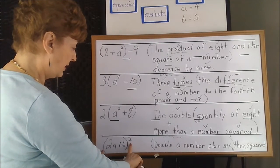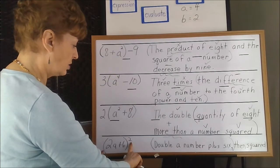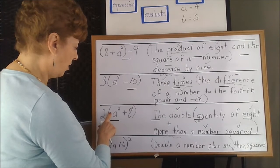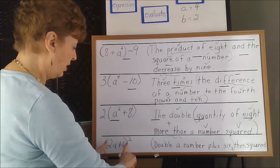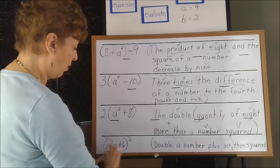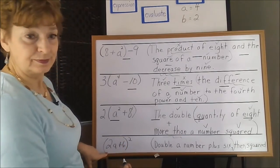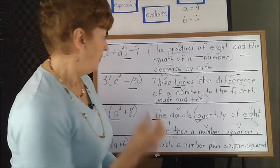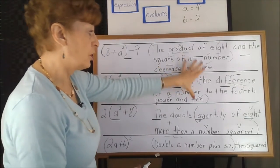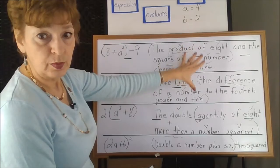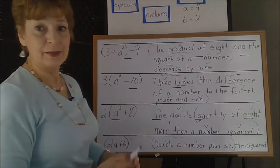Only what the exponent touches gets squared. In this case, only the a is squared. But when you want the whole quantity squared, you put parentheses around the whole thing — then the 2 is touching this whole portion. So now this is the way we have taken the verbal, the words, and changed them into the mathematical symbols.